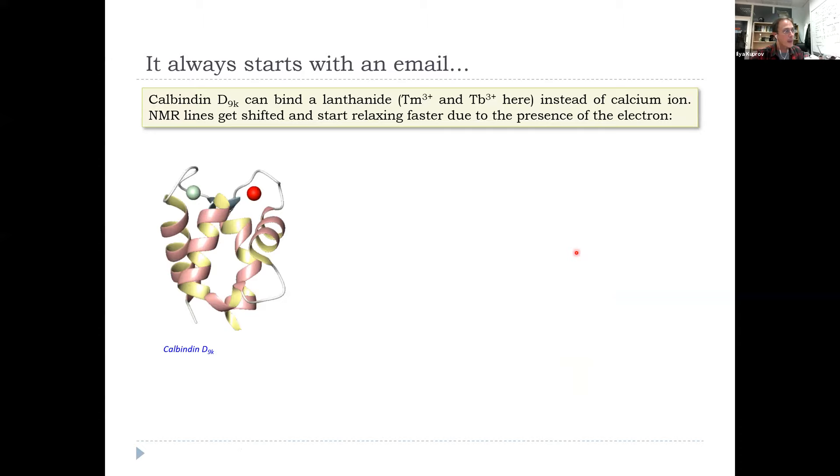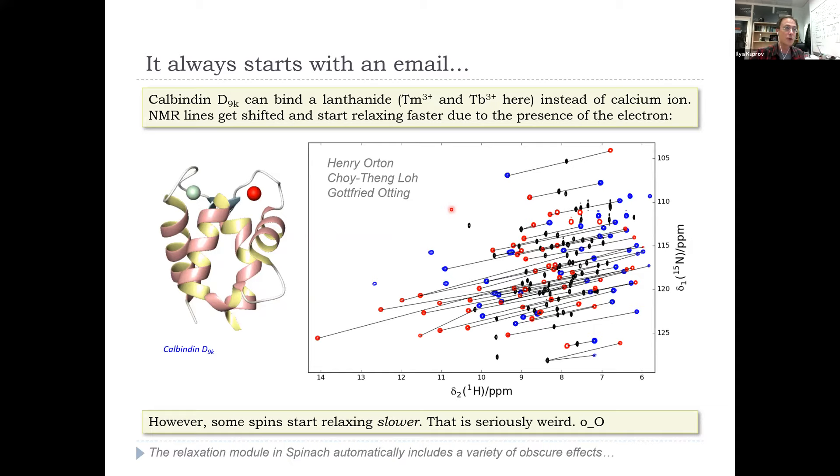Lovely, nice and easy, hundreds of papers on the subject paramagnetic relaxation enhancement. Gottfried and company, as well as people in Cyana, Diana, and other dominant structural biology packages have the possibility of accounting for this in the structural refinement. Now the funny story began with an email. Henry Orton, a Gottfried's PhD student, emailed me at some point and said, Ilya, we have a bit of a problem here. We took calbindin, which just binds two equivalents of calcium here and here, and replaced calcium with terbium and thulium, and re-measured the relaxation rates and the pseudocontact shifts. The pseudocontact shifts were lovely, so thulium gets it one way, terbium gets it the other, structural refinement perfect. With one little problem, he said, when we take calcium out and put thulium and terbium in, some nuclei start relaxing slower.